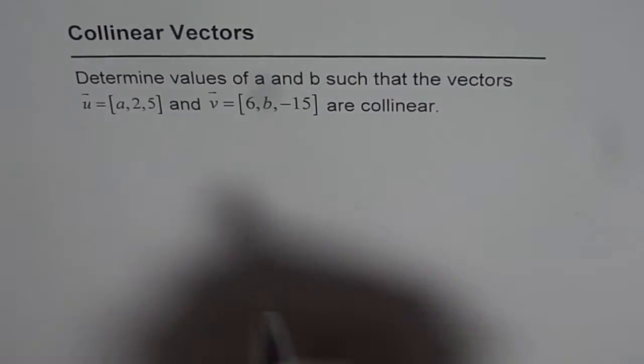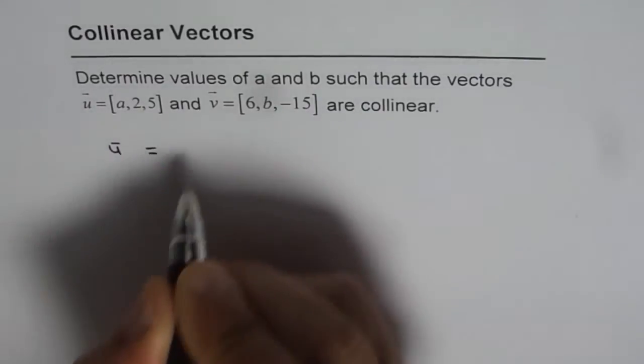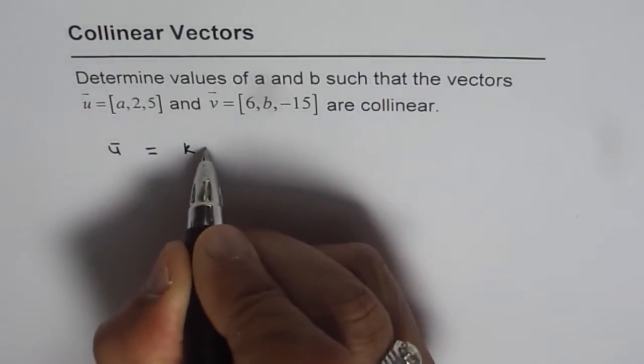Now if the vectors are collinear, that means they are scalar multiples. In that case, u should equal k times v.